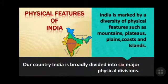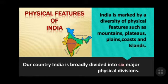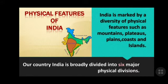Now we are going to see the physical features of India. India is famous for its physical divisions — it is bounded by the lofty Himalayas, the Arabian Sea in the west, the Bay of Bengal in the east, and the Indian Ocean in the south. There are also features like mountains, plateaus, plains, coasts, and islands. India is broadly divided into 6 major physical divisions, as the surface is uneven — not uniformly flat or high everywhere.